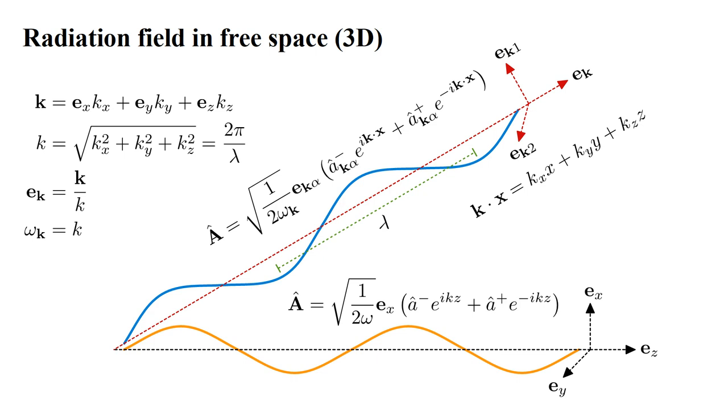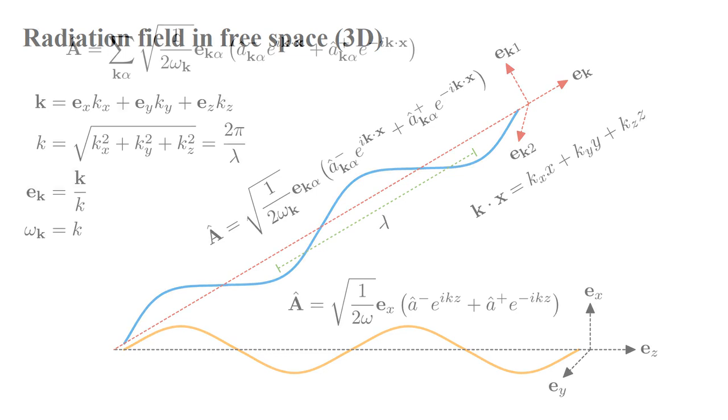Here, e_{k,α} can be e_{k,1} or e_{k,2}. The most general radiation field is then the sum over all propagation vectors k and the two polarizations α of this mode expression.